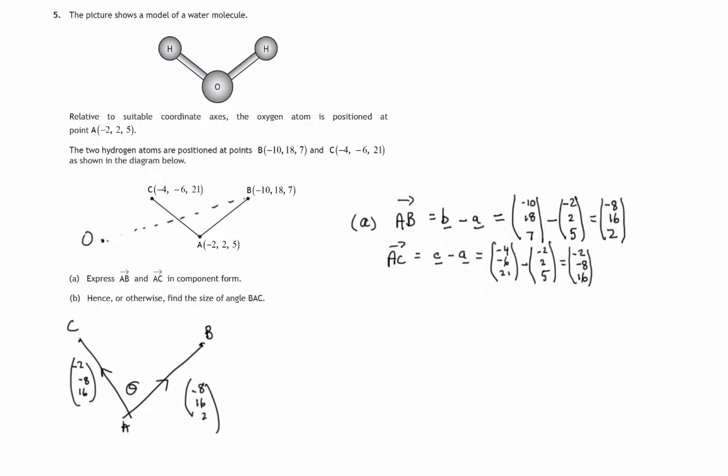So let's look at part b, hence or otherwise find the size of the angle BAC, the size of that angle theta. Now the theory behind this, if you have a couple of vectors v and w with an angle theta between them, we know that the dot product v dot w is defined as the length of v times the length of w times the cosine of the angle between theta. So if we want cos theta on its own, we divide by the product of these two lengths. So we'll end up with v dot w over the length of v times the length of w, magnitude of v times the magnitude of w. So that's the definition.